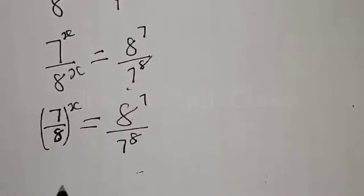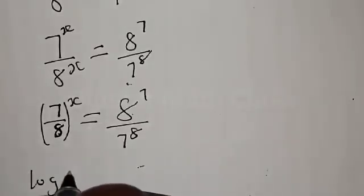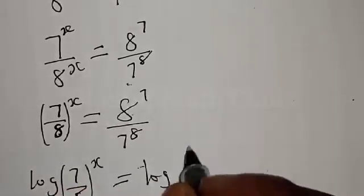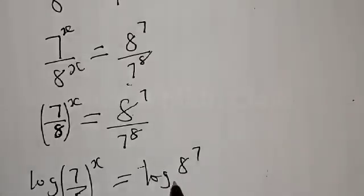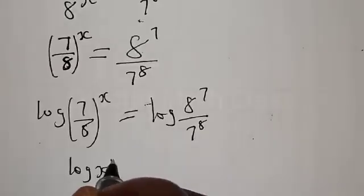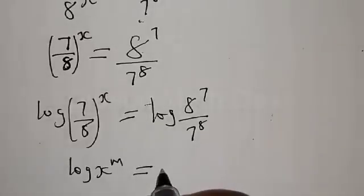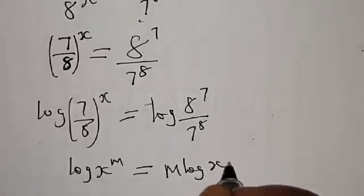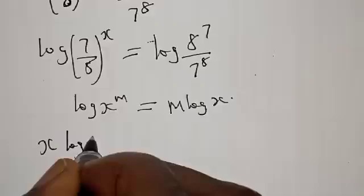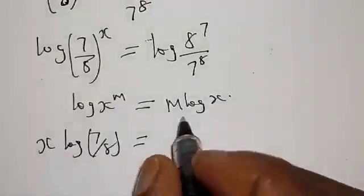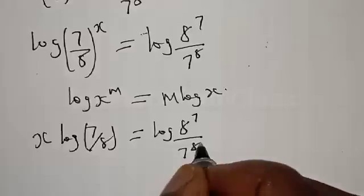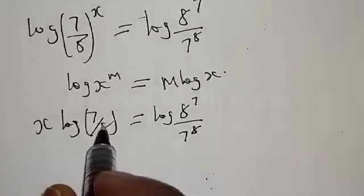Then let's take the log of both sides. We have log of 7 over 8, raised to power x, is equal to log of 8 raised to power 7 over 7 raised to power 8. Remember, if you have log s raised to power m, that is the same as m times log s. Therefore, x times log of 7 over 8 is equal to log of 8 raised to power 7 over 7 raised to power 8.